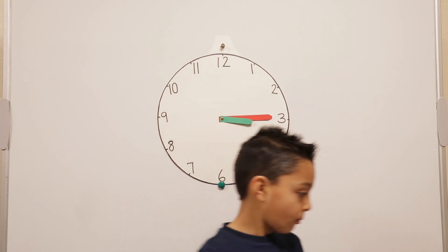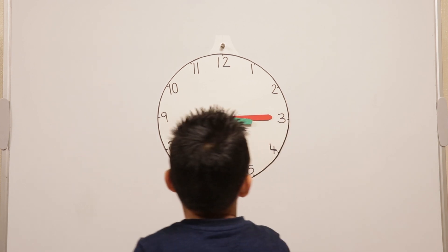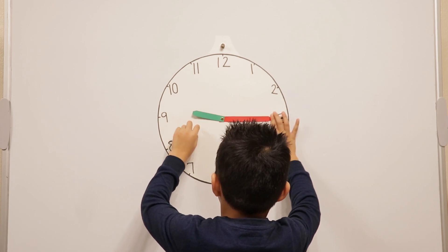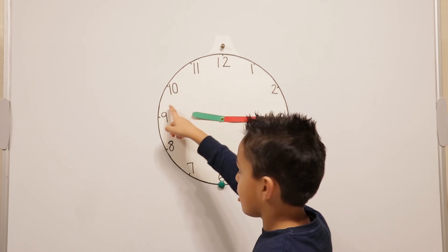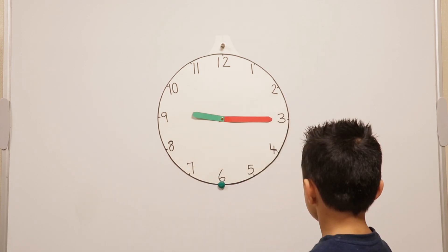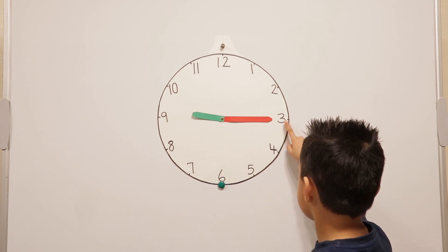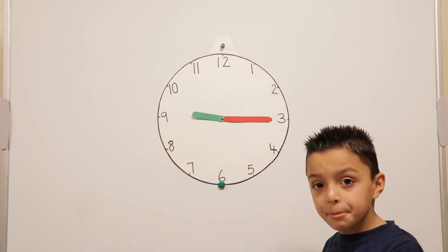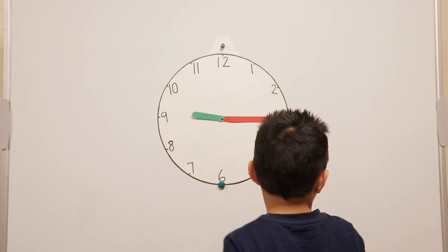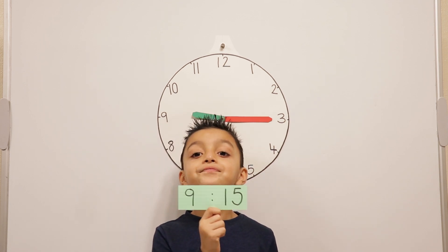Can you set the clock to quarter past nine and explain the hands? The minute hand is pointing to the three — that's what happens when it's quarter past the hour. And the hour hand has gone just past the nine, about a quarter of the way between nine and ten, on its way to ten. And how would we write quarter past nine? Nine fifteen — fifteen minutes past nine — and the second way: quarter past nine.